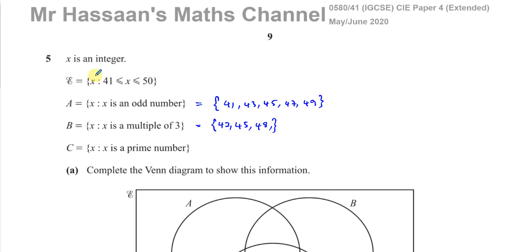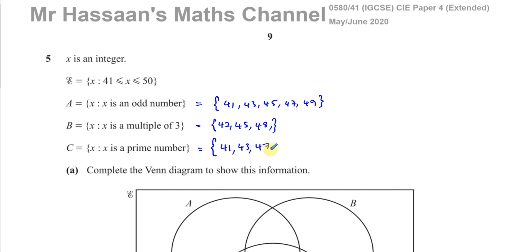For Set C, prime numbers: a prime number has exactly two factors, one and itself. 41 seems like a prime number. All even numbers apart from 2 are not prime, so none of the even numbers qualify. 43 is prime. 45 is not prime because its digits add up to 9. 47 is prime. 49 is not prime because 7 times 7 is 49. So the prime numbers in range are {41, 43, 47}.